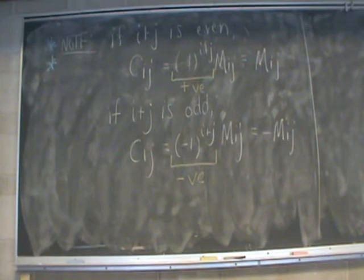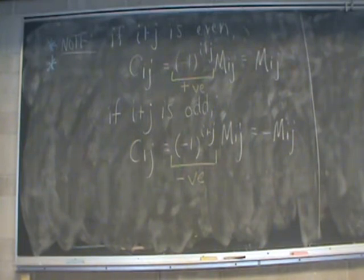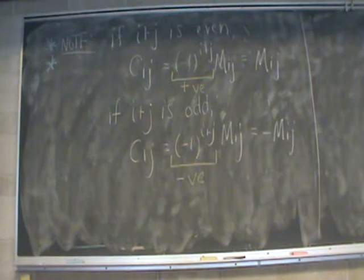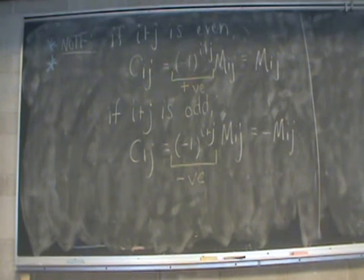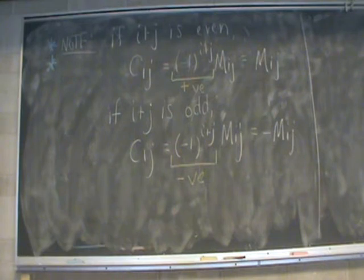Here's a helpful note for calculating cofactors. It comes down to whether i + j is even or odd. If i + j is even, then (−1)^(i+j) = +1, so the cofactor equals the minor. If i + j is odd, then (−1)^(i+j) = −1, so the cofactor equals the negative of the minor.